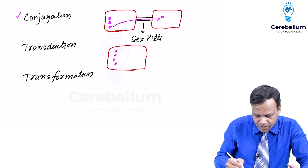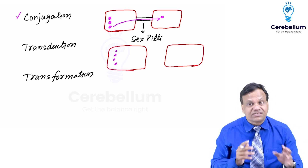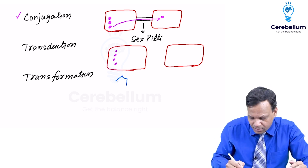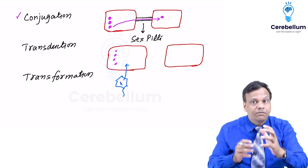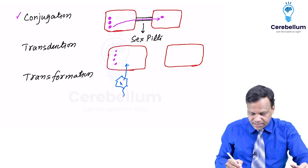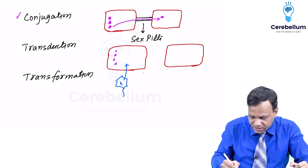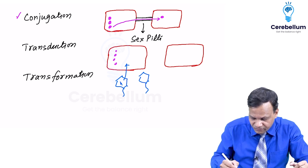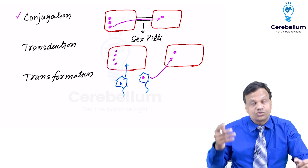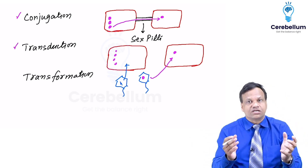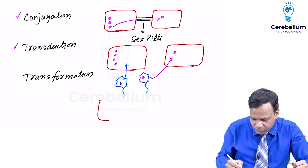The second method is transduction. A virus called a bacteriophage infects the resistant bacteria and takes up the resistance gene. The bacteriophage then comes out carrying the resistance gene and infects a second, non-resistant bacteria, transferring the resistance gene into it. So transduction means transfer of resistance with the help of a bacteriophage.